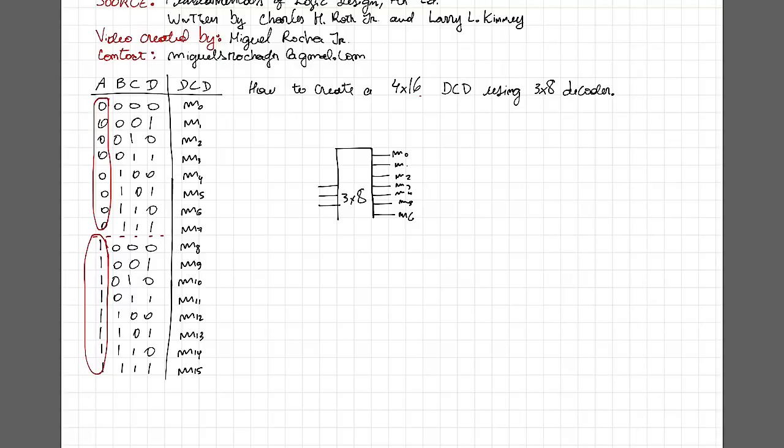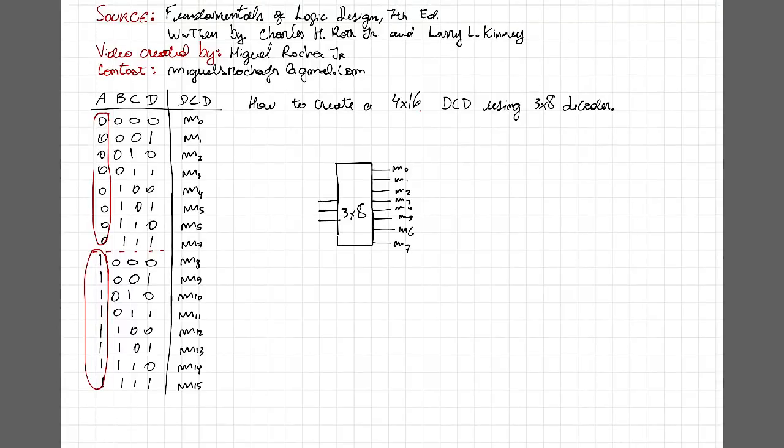Now that we know that we can use one decoder to generate the minterms from M0 through M7, how do we generate the rest of the minterms? The answer is another decoder. So what you need is to use another decoder.